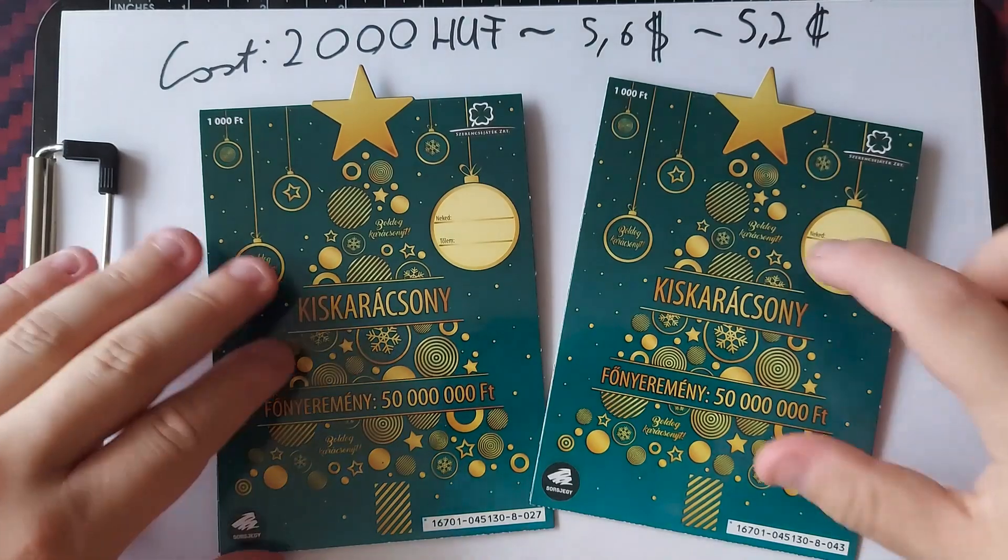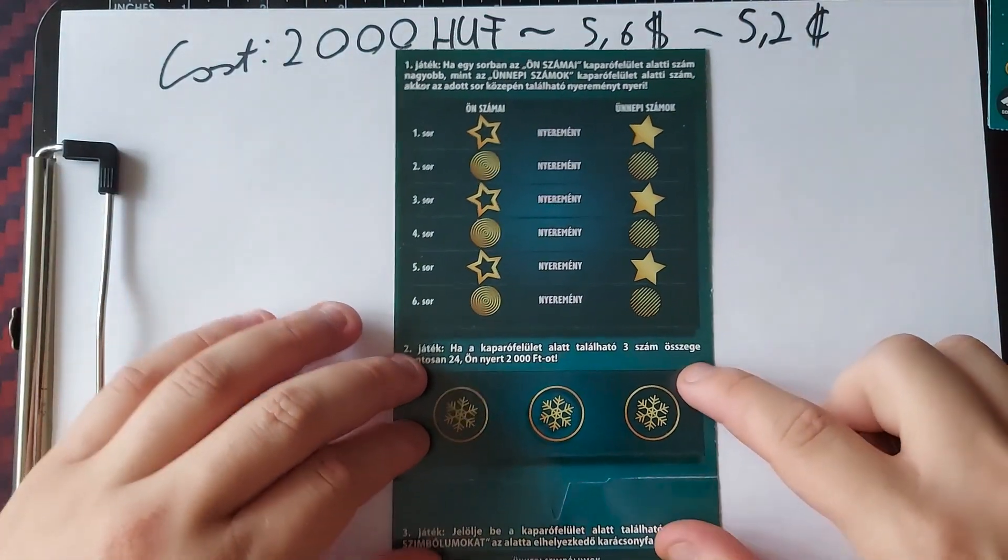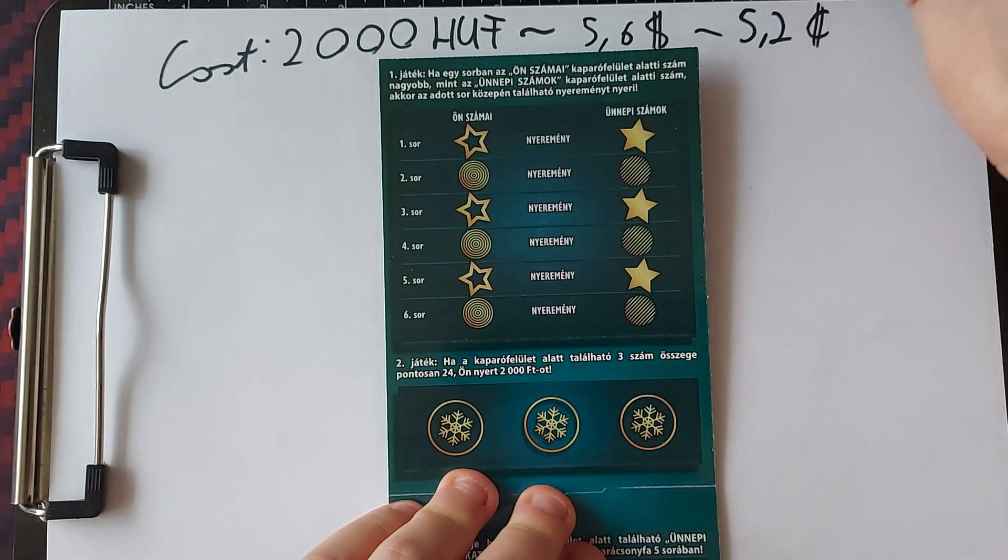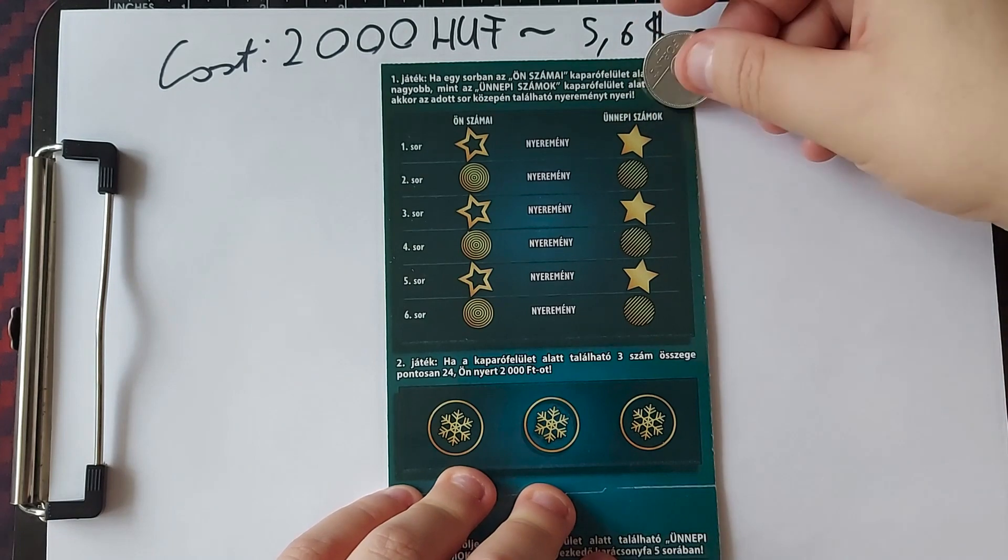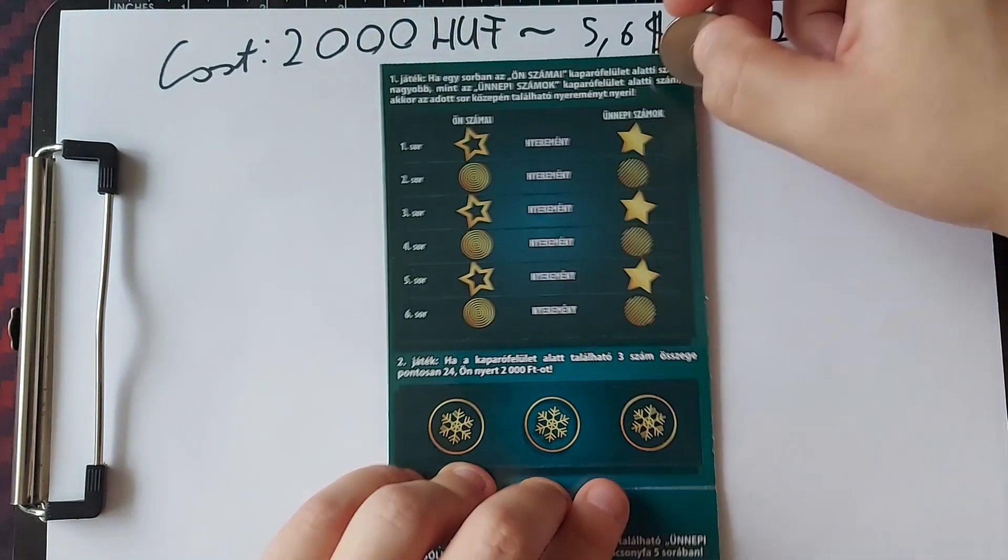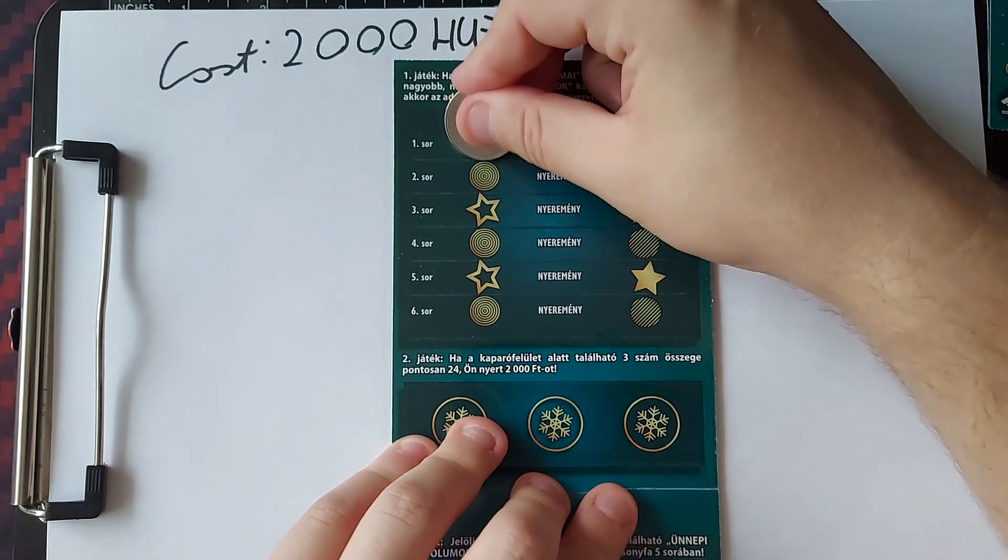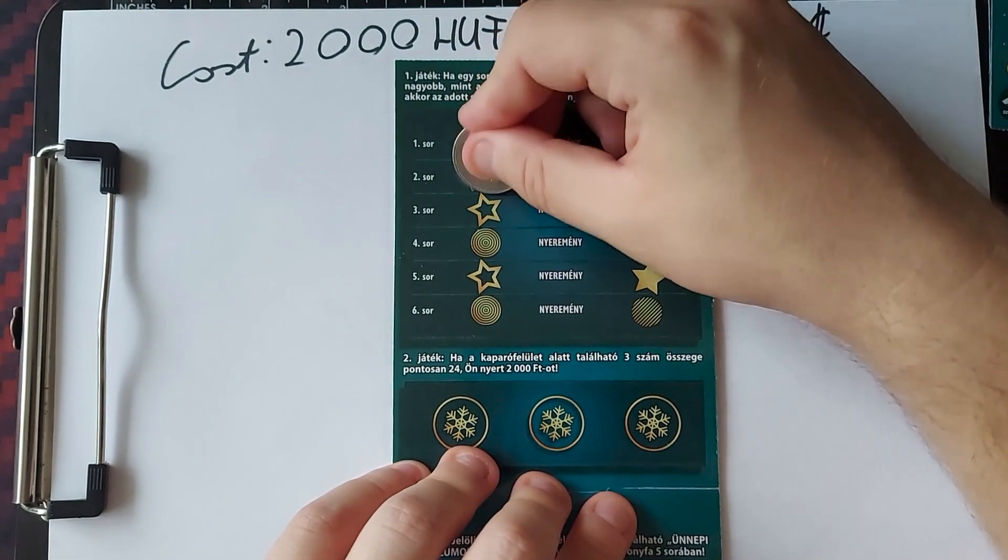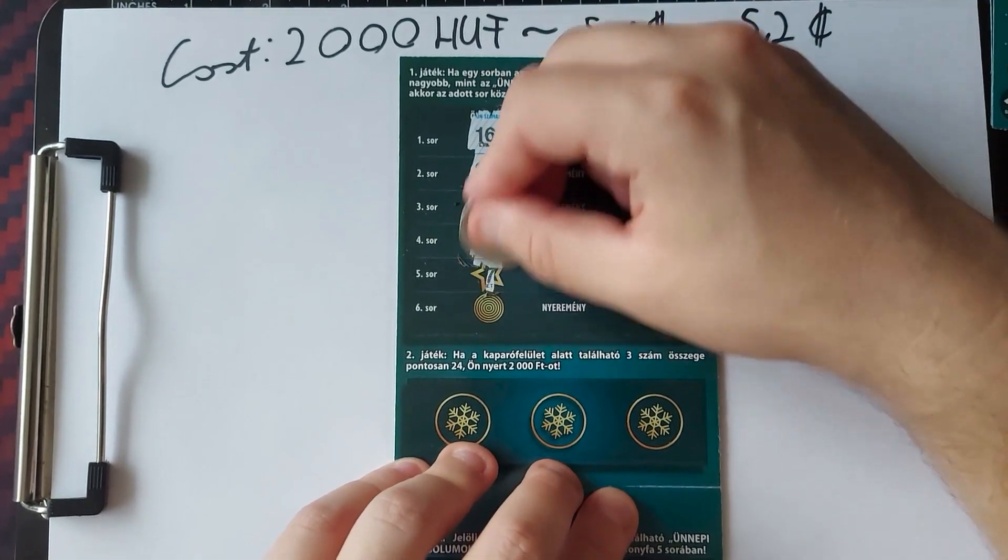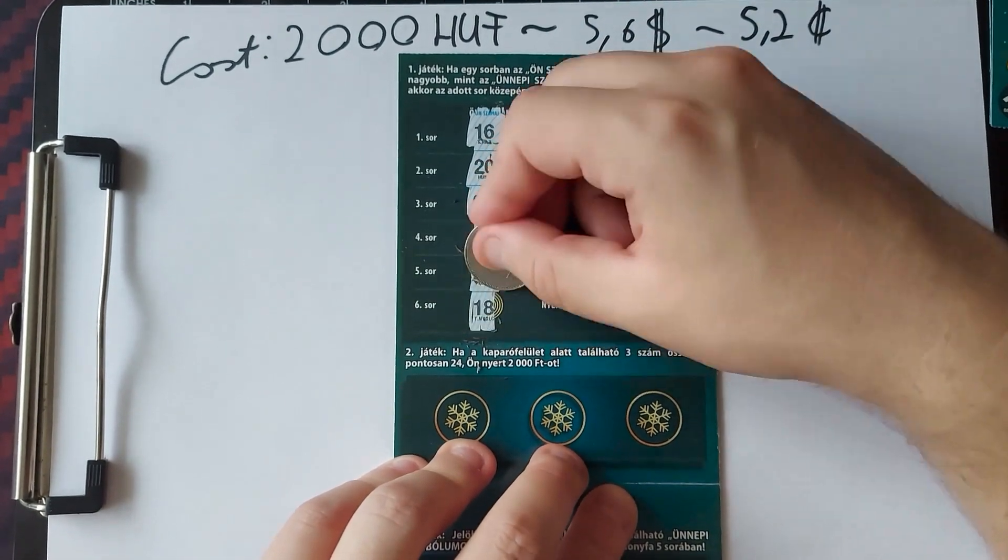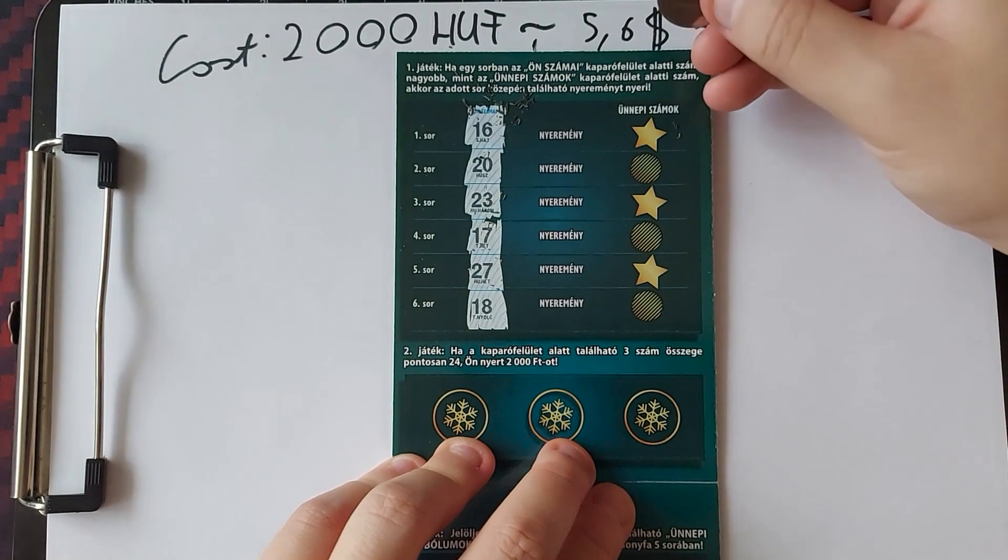Let's see if we can win something. We got 3 games with this one. The first game is, we have numbers and we have festive numbers. And if our number is bigger than the festive number, we win money. So, our number is 16, 20, 23, 17, 27 and 18. Pretty small numbers, in my opinion.